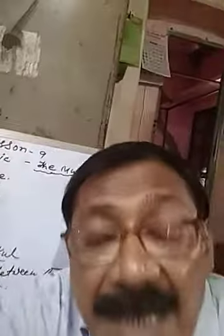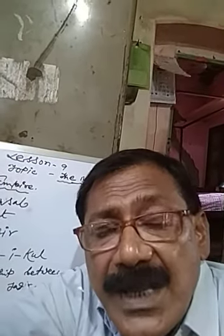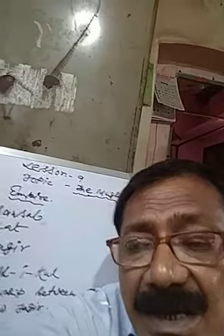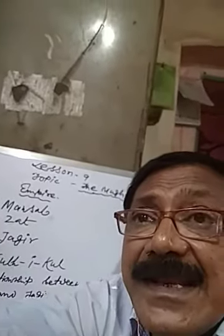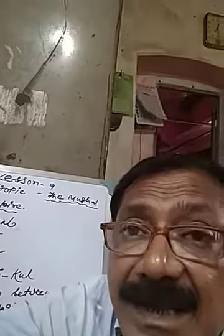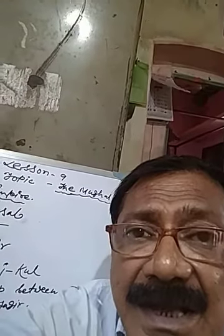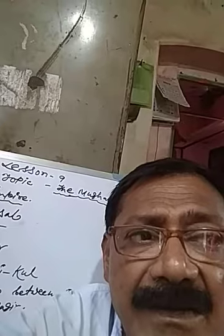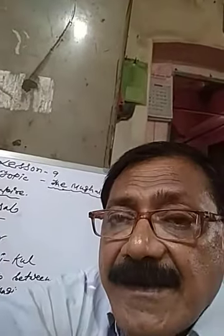The second one is Jaat. What is Jaat? Jaat is the numerical value by which the rank and salary of the Mansabdars were decided. The numerical value by which rank and salary of a Mansabdar were calculated — this is known as Jaat.